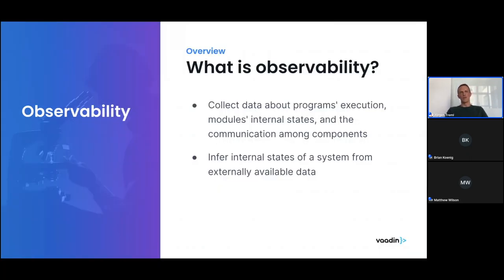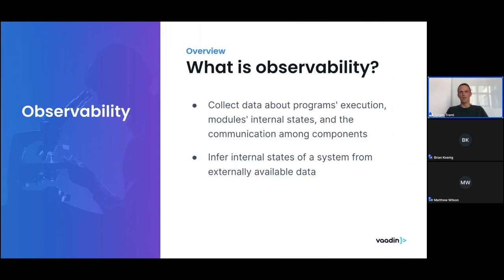If you were to look around for definitions of observability, you would find something like: collect data about a program's execution, modules, internal states, and the communication among components. Infer internal states of a system from externally available data. It certainly makes sense, particularly for running live production systems, because obviously what we cannot do there usually is attach a debugger and start up our IDE and track down problems or issues like that. But we somehow have to collect all the necessary data from the system continuously to understand what's going on there and be able to observe the system.